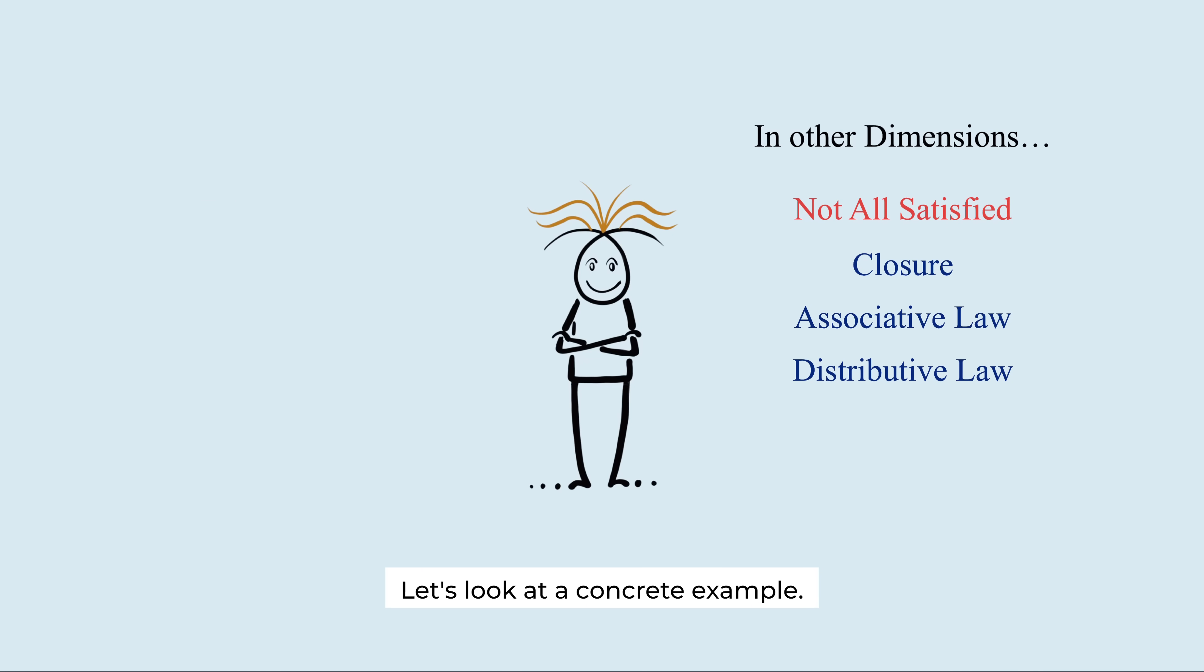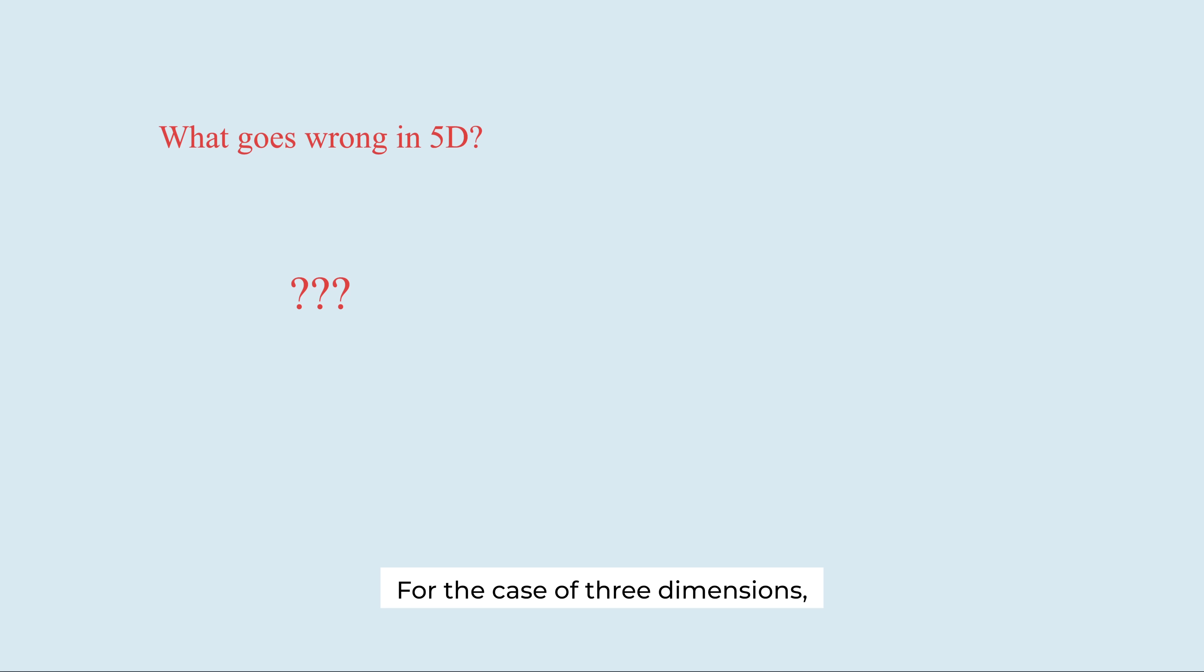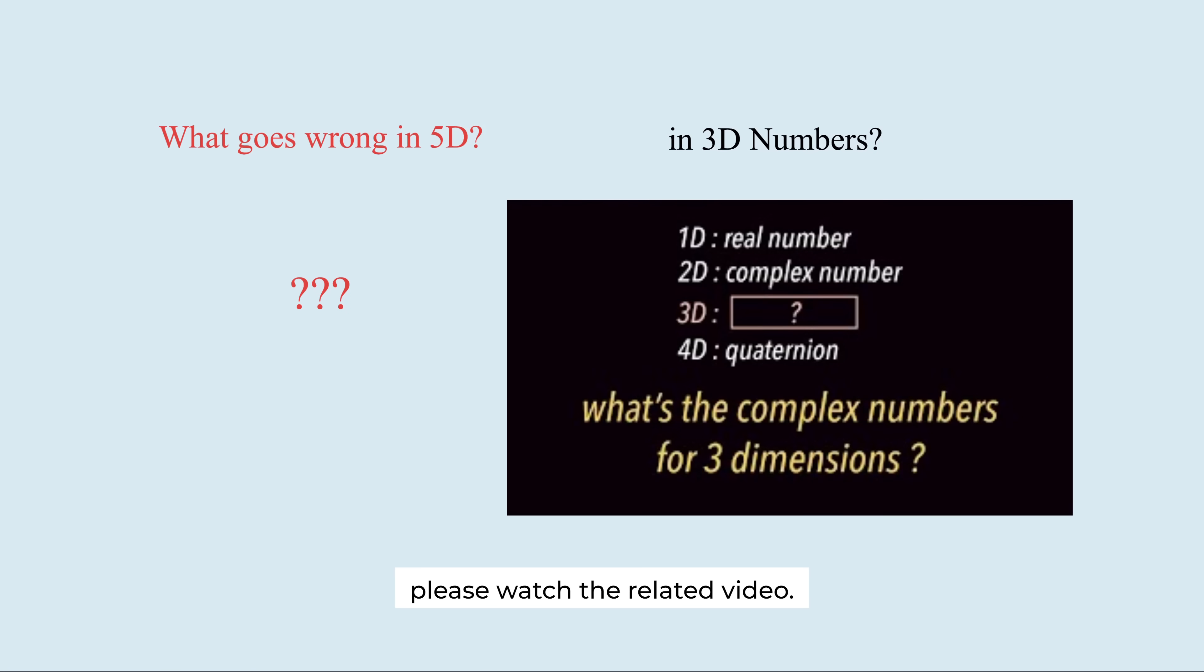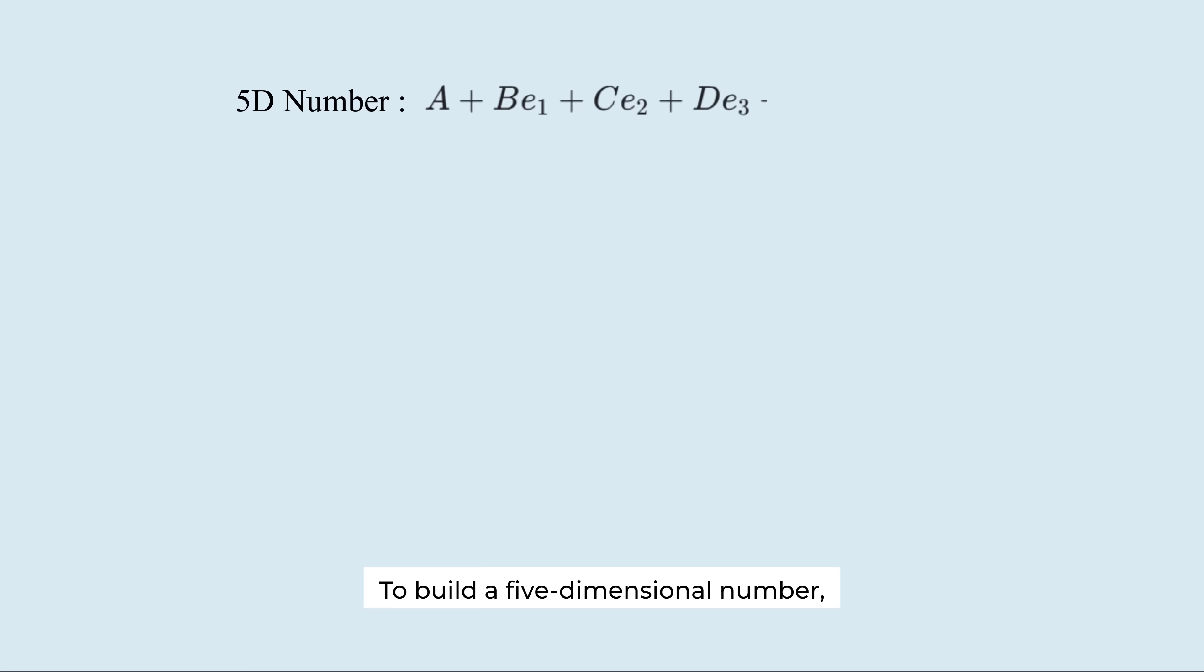Let's look at a concrete example. What goes wrong in 5 dimensions? For the case of 3 dimensions, please watch the related video. To build a 5-dimensional number, you need one real part and 4 distinct imaginary units. Each imaginary unit is assumed to square to minus 1.